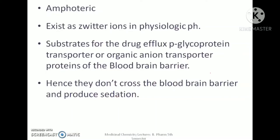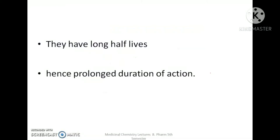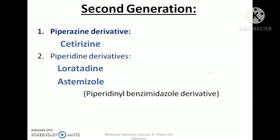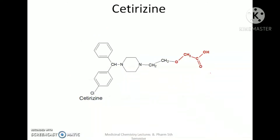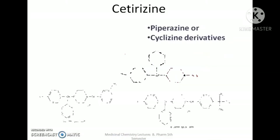As a result, second generation antihistamines will not reach the CNS, will not interact with H1 receptors in the brain, and therefore do not produce sedation. They are potent and have a long half-life. They can be classified into: piperazine derivatives (e.g., cetirizine), piperidine derivatives (e.g., loratadine), and piperidine-benzimidazole derivatives (e.g., astemizole). Now let's see the chemistry of cetirizine. You can see similarities with the cyclizine derivatives — here also you can see a piperazine ring.